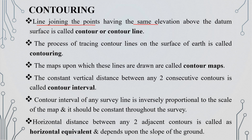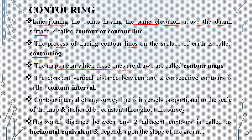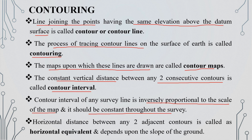When contour lines are drawn on a map, they connect points of equal elevation and form what is called a contour map. The contour interval is the vertical distance between two consecutive contours — this distance is constant throughout a map. The horizontal equivalent is the horizontal distance between adjacent contours.